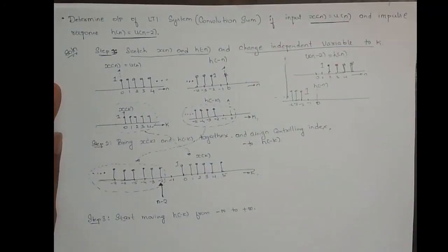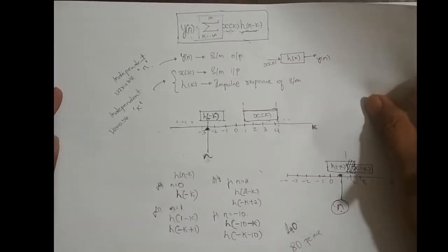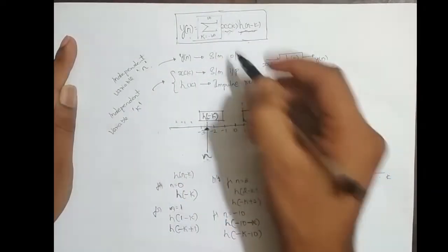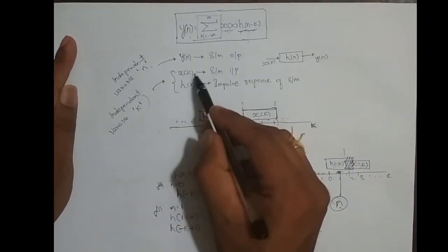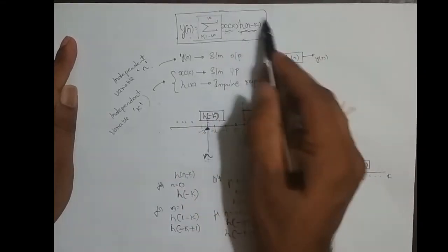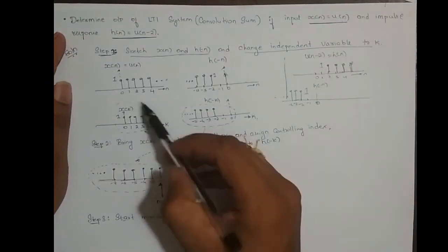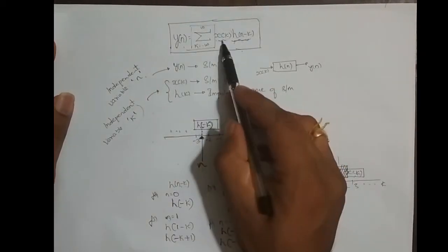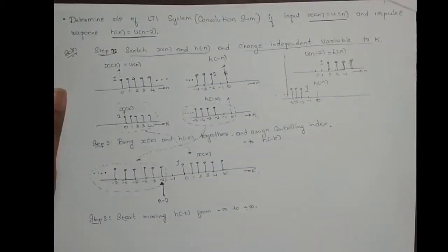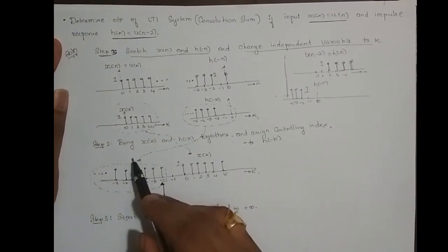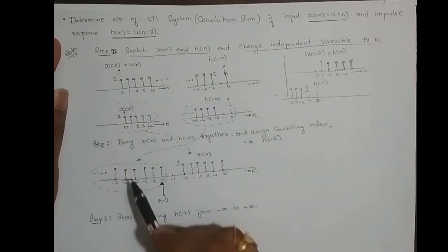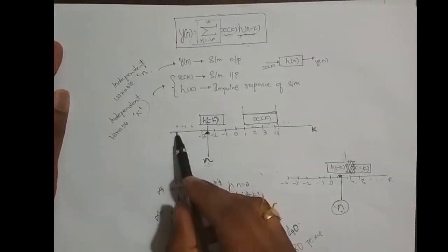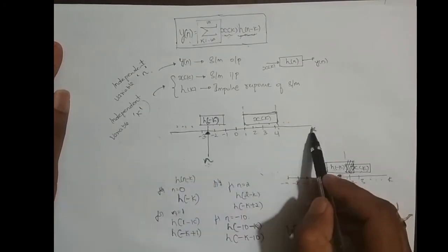The reason I change the independent variable to k is — as seen in my previous video — the convolution sum equation is y(n) = summation with k varying from minus infinity to infinity. The independent variable for both the input sequence and impulse response is k, so to match the equation I keep the independent variable as k. So x(n) becomes x(k) and h(-n) becomes h(-k).